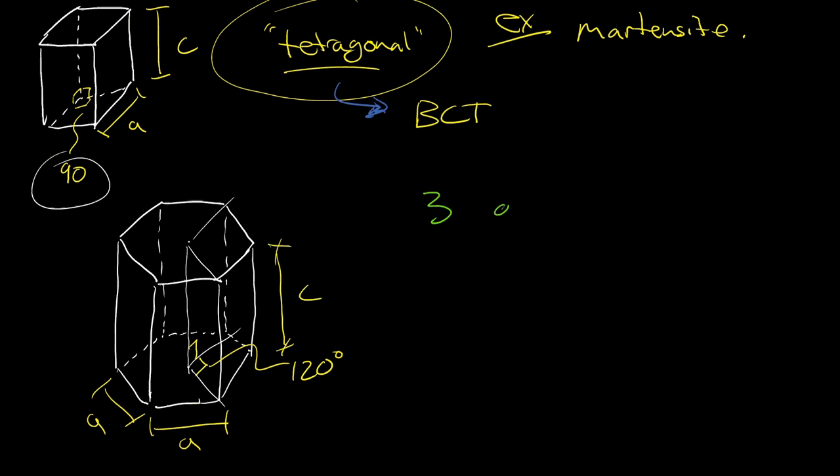So by actually going to all the different combinations of the three angles, and we actually refer to them as alpha, beta, and gamma, and the three lattice parameters,